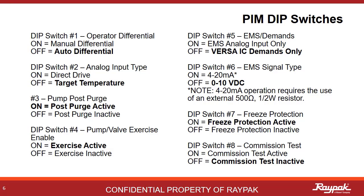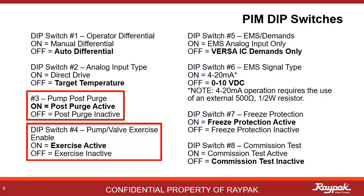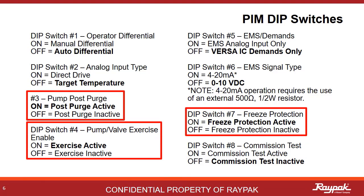A handy thing to remember is that in most cases, without a building management system, the typical setting for the PIM dip switches are number three, four, and seven on, all others off.